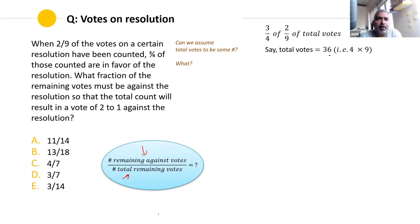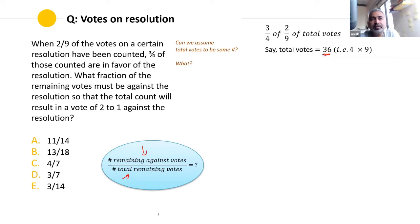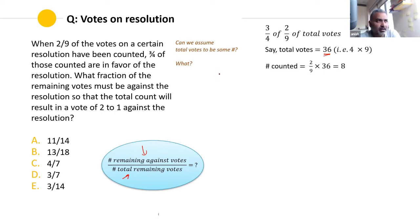The thought process behind choosing 36 is essential. If I chose 100, two-ninths of 100 gives a weird decimal. Instead, I want a multiple of four and nine — that's 36. So total votes are 36. Two-ninths of 36 equals 8 votes counted. Three-fourths of those 8 are in favor, so six votes are in favor.